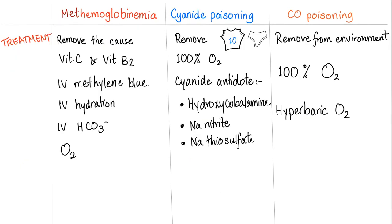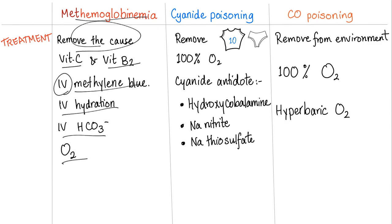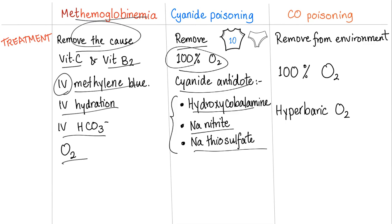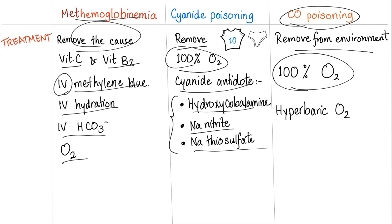Treatment: For methemoglobinemia — remove the cause; give vitamin C and vitamin B2 if mild; if severe, give IV methylene blue; hydrate; bicarbonate for the acidosis; and oxygen. For cyanide poisoning — remove from exposure, give 100% oxygen, and the famous cyanide antidote triad: hydroxocobalamin, sodium nitrite, and sodium thiosulfate. For carbon monoxide poisoning — remove from the environment, give 100% oxygen, and if the case is severe, use the hyperbaric oxygen chamber.